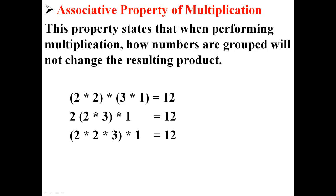If we were to move around the parentheses, it wouldn't change our answer. For example, 2 times 2 times 3 times 1 is equal to 12. Also, 2 times 2 times 3 times 1 is again equal to 12. This is according to the associative property of multiplication.